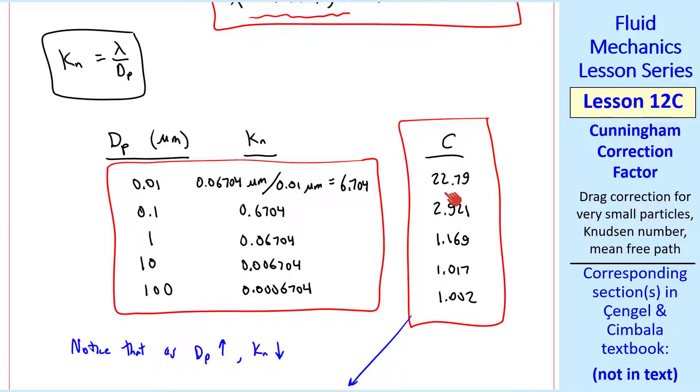Here's a column of Cunningham correction factor as a function of dp, where we calculate C based on the Knudsen number. As I had plotted, C goes down as particle diameter goes up. So as particle diameter increases, Knudsen number decreases, and C also decreases, but it doesn't go to 0. It levels off at 1.